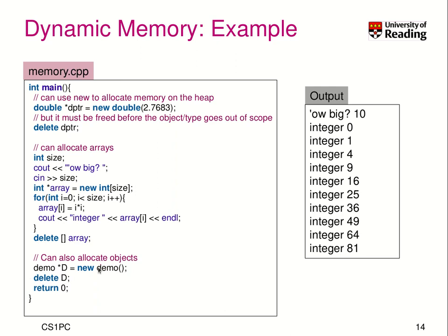We can also allocate objects — meaning instances of classes. For example, new Demo and delete the pointer d, which deletes the object behind the pointer. This will call the constructor and the destructor. For basic elementary data types like double and int, there is no constructor in C++, but you can still use the new and delete syntax. So that was how we used it so far.